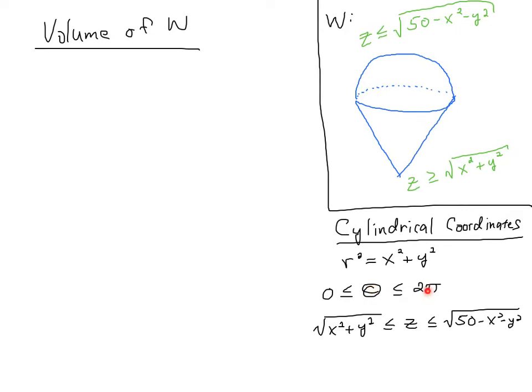theta ranges between 0 and 2 pi. And z is bounded below by the cone and above by the sphere. So those are going to be the natural boundaries presented by the problem.